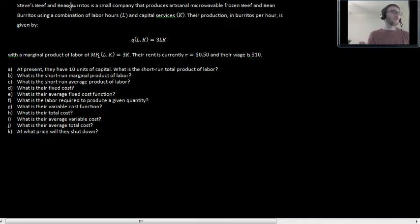Steve's Beef and Bean Burritos is a small company that produces artisanal microwavable frozen beef and bean burritos using a combination of labor hours L and capital services K. Their production in burritos per hour is given by a pretty simple Cobb-Douglas production function. Q as a function of L and K is equal to 3LK. If you know calculus then you don't need this line but the marginal product of labor is given by 3K and we have their rent and their wage, the price of labor. And then we have a lot of questions. It turns out with just basically one, two, three pieces of information you can find a lot of stuff. I know some people get a little skittish if we don't have numbers in here so we'll stick with numbers for now.